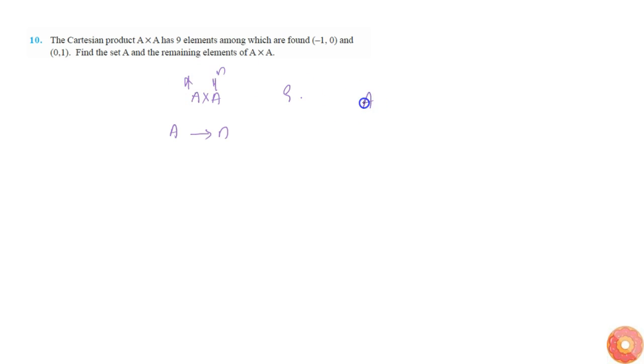We know that in A cross B, the number of elements will be equal to n of A into n of B. So here in A cross A, the number of elements in A cross A will be equal to n of A into n of A.